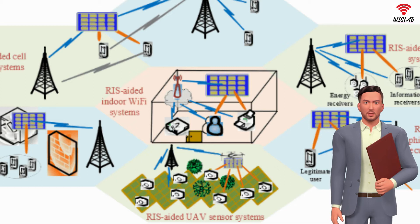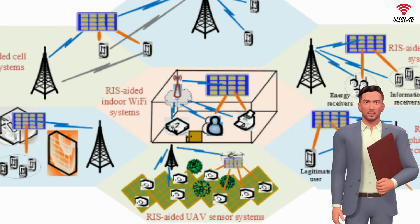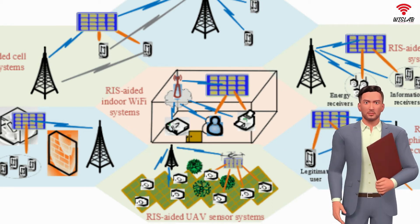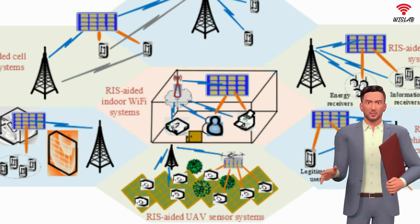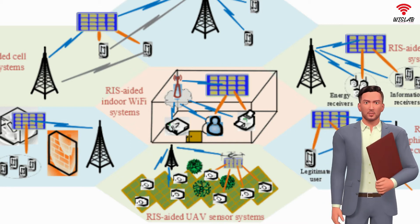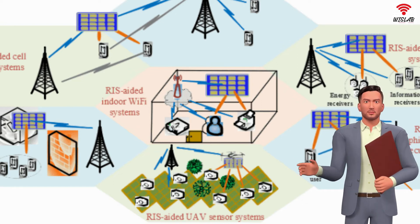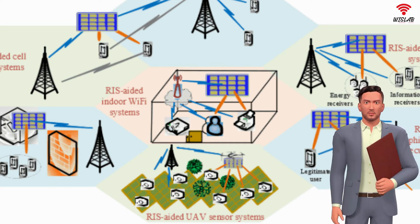Reconfigurable intelligent surfaces, RIS, or intelligent reflecting surfaces, IRS's, are regarded as one of the most promising and revolutionized techniques for enhancing the spectrum and/or energy efficiency of wireless systems. They are capable of reconfiguring the wireless propagation environment by carefully tuning the phase shifts of a large number of low-cost passive reflecting elements. In a typical scenario envisioned for their operation, the optimal reflection coefficients of the RIS are calculated at the BS, and then sent to the RIS's controller through a dedicated feedback link.